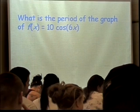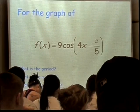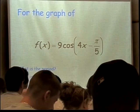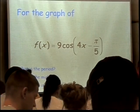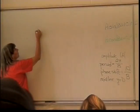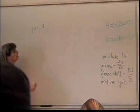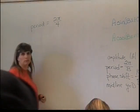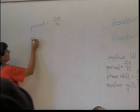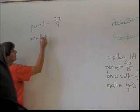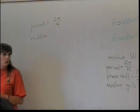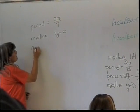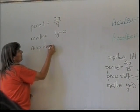Now we have a big long one: 9 cosine of 4X minus π over 5. Let's start with the period — it's going to be 2π over 4. By the way, if you want to simplify these, feel free, but you don't have to. What is the midline? Because there's no plus D out here, the midline hasn't changed — it's still going to be Y equals 0. What's the amplitude? It's 9.